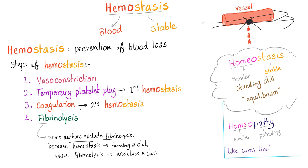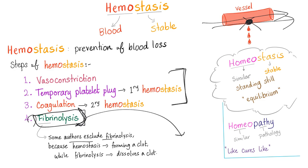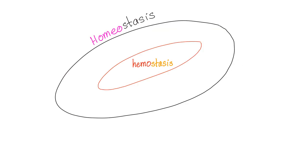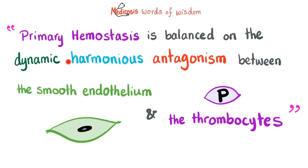Some authors exclude fibrinolysis because they claim hemostasis is blood clotting, and fibrinolysis destroys clots. Homeostasis is not opposite to hemostasis — in fact, hemostasis is part of homeostasis, part of your normal body physiology. Primary hemostasis is balanced on the dynamic harmonious antagonism between the smooth endothelium, which wants blood flow, and thrombocytes, which favor coagulation.